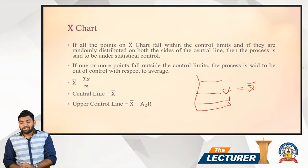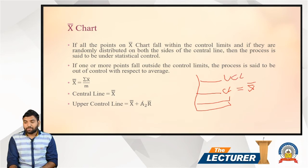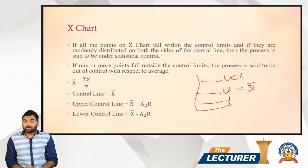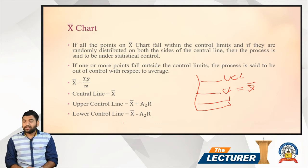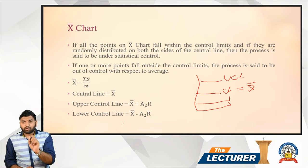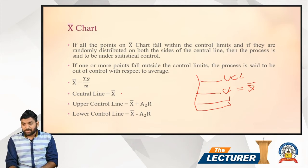The upper control line is X-double-bar plus A2 R-bar. The lower control line formula is X-double-bar minus A2 R-bar. The simple difference between the upper control line and the lower control line is just a plus or minus. If you put a plus in the formula, it gives the upper control line; if you put minus, it gives the lower control line.